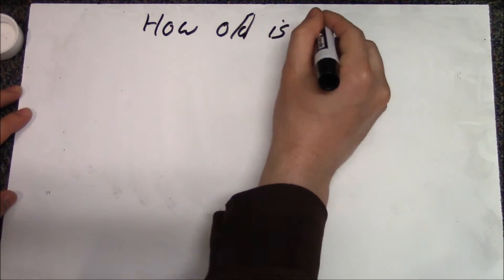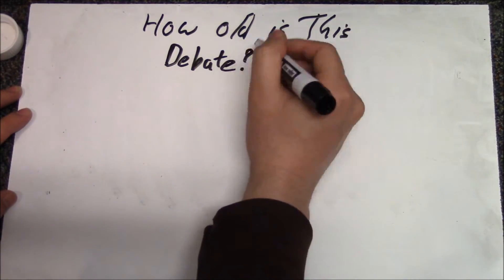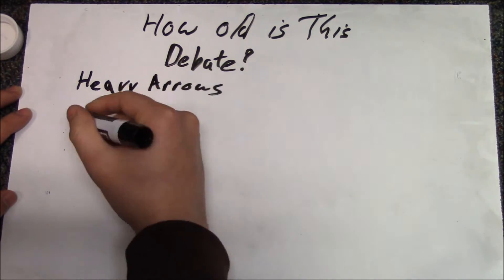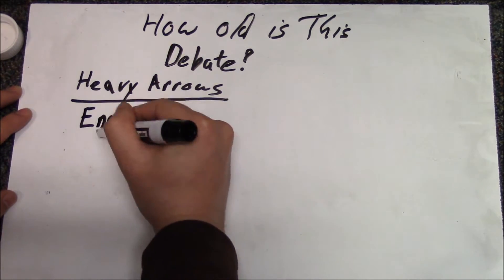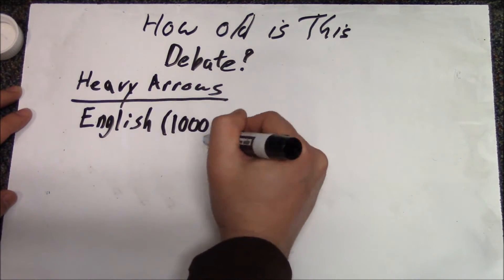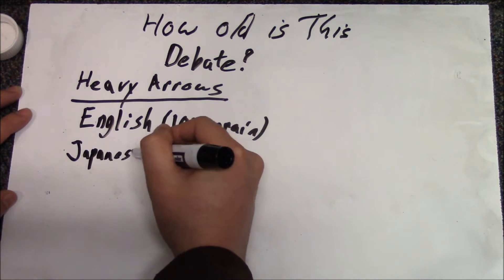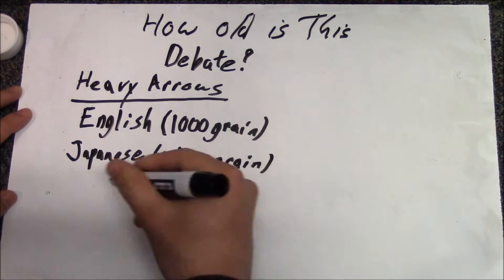Looking into this from a historical perspective, this debate is actually quite old. There are arguably heavy arrow cultures and light arrow cultures. The heavy arrow cultures include the English, with their longbowmen, the Japanese, and the Manchu.